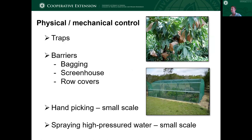Examples of physical and mechanical control include traps — possibly using some kind of lure — as well as barriers such as bagging fruit, screen houses, or floating row cover. Handpicking is an option on a very small scale but not usually feasible at a commercial level. And then even just spraying high-pressure water on a small scale — literally physically removing and washing pests off.